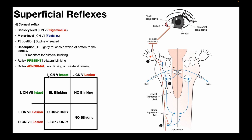Finally, what happens if we have an intact trigeminal nerve but a lesion in the left facial nerve or the right facial nerve? The trigeminal nerve ultimately feeds information to both the ipsilateral and contralateral facial nerves. If we have an ipsilateral (left) facial nerve lesion, we'll still get stimulation of the contralateral facial nerve, so we'll only get a right blink — left blinking is absent. Conversely, if the trigeminal nerve is intact but we have a right facial nerve lesion, we'll still get ipsilateral blinking because that side is intact, but the contralateral facial nerve is damaged, so we only get a left (ipsilateral) blink.